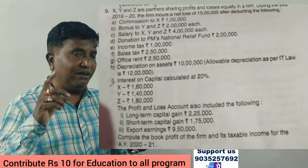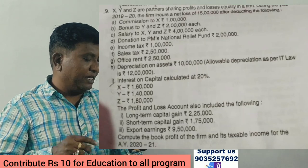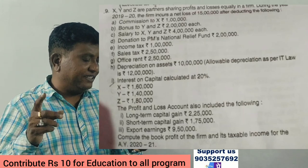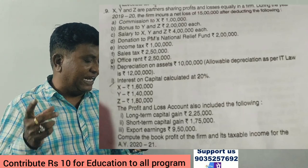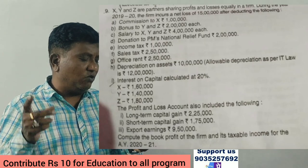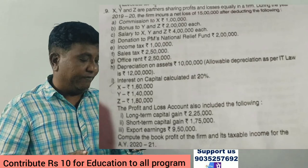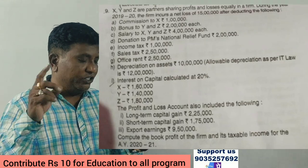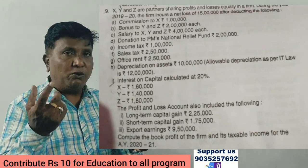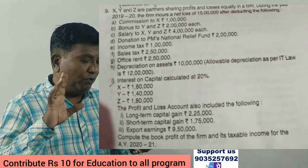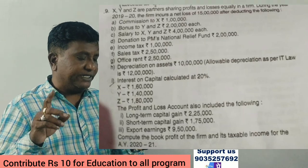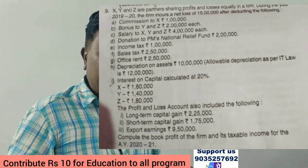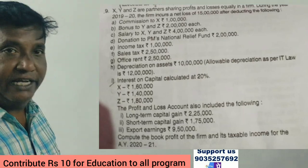Interest on capital calculated at 20%: X 1 lakh 60, Y 1 lakh 40, Z 1 lakh 80. The profit and loss account also included: long term capital gain, short term capital gain, and export earnings. Compute the book profit of the firm and its taxable income for the assessment year 2020-21.